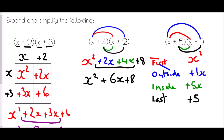We simplify the two middle terms: x squared, plus one x plus five x is plus six x, and finally add five. So the answer is x squared plus six x plus five.